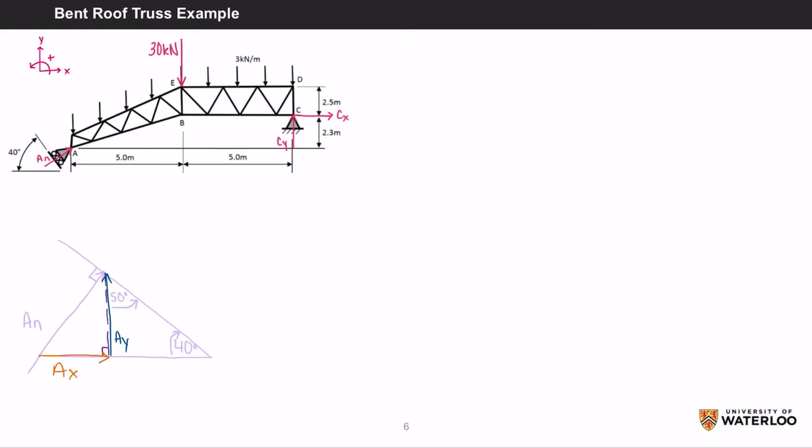We also know that AN is perpendicular to this line creating a 90 degree angle. That means that this angle must be 40 degrees. We can now solve for AX and AY using SOHCAHTOA. Sine 40 equals AX over AN, giving you AX equals AN sine 40.